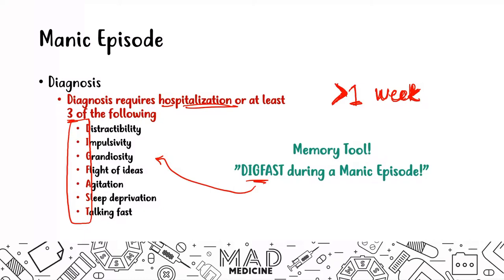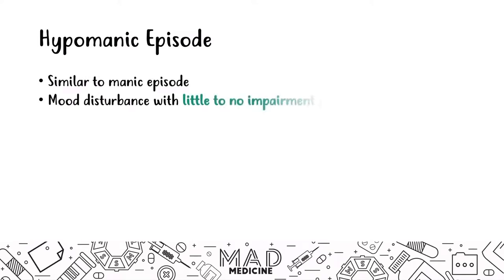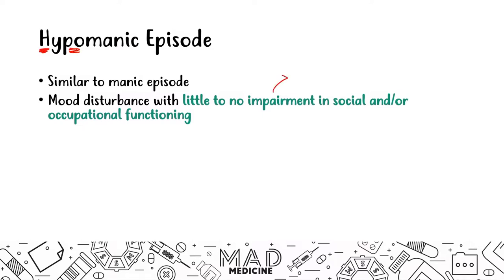The next disorder is a hypomanic episode, which is very similar to a manic episode. The key difference is that the mood disturbances have little to no impairment with function — it's a milder form of a manic episode. In a hypomanic episode, patients won't have much impairment and will be able to function normally. They'll still have manic features like staying awake all night or having a lot of energy, but without impairing their ability to go to work.